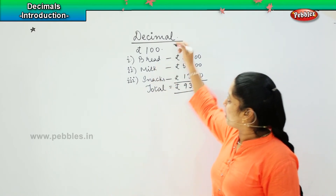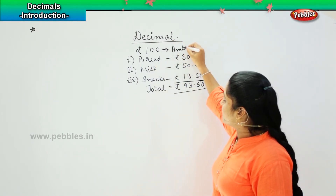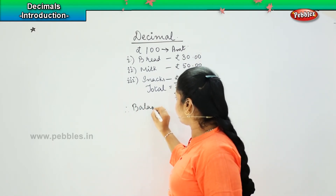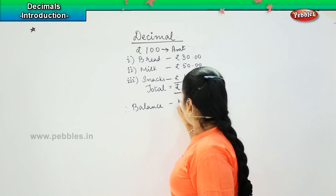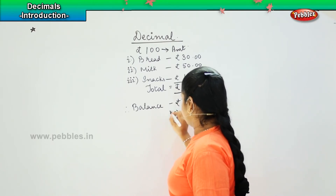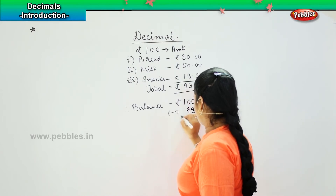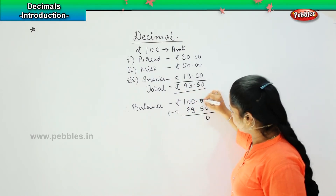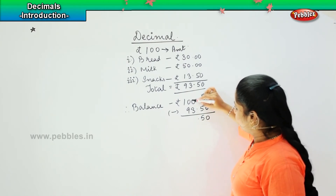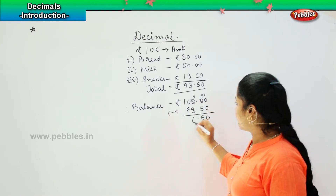How much did my mother give me? My mother gave me hundred rupees. So what is the balance that I have to bring? The balance will be rupee hundred point zero zero minus ninety three point five zero. This will become zero, ten minus five is five, then we will be following the subtraction rule — the borrowing rule.